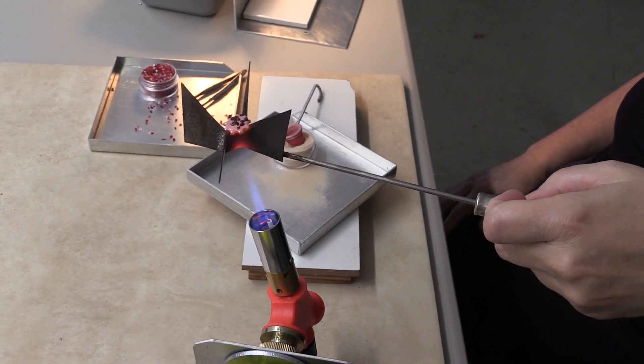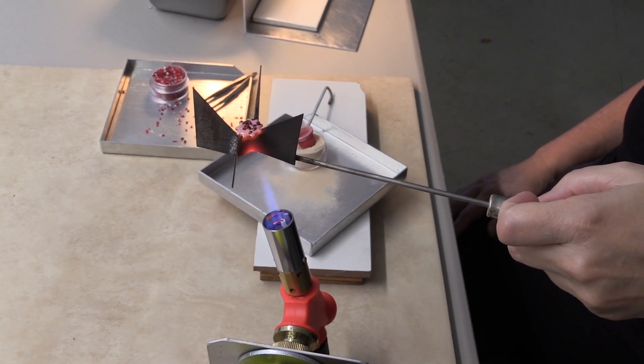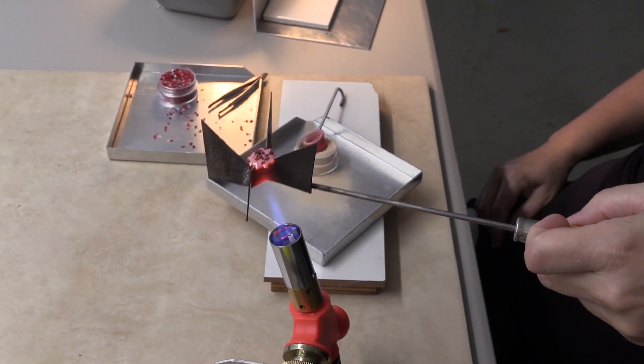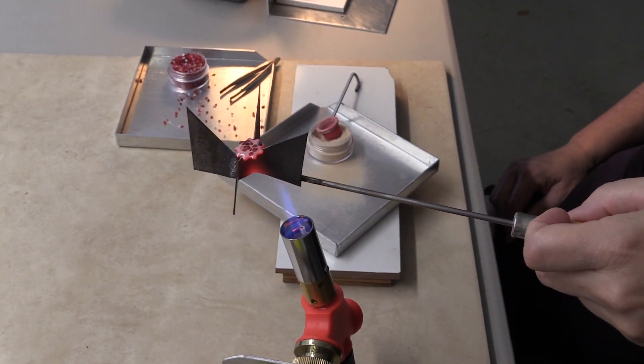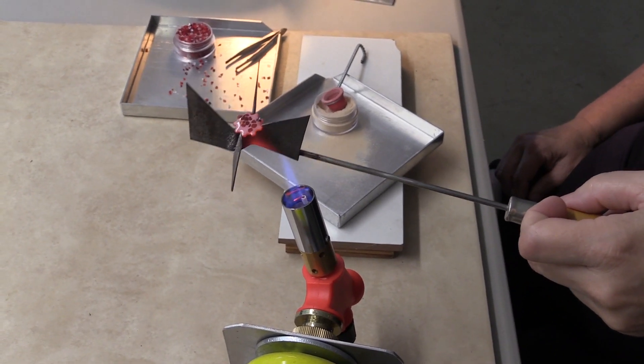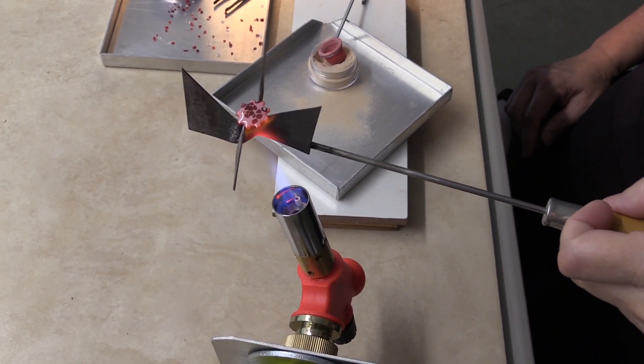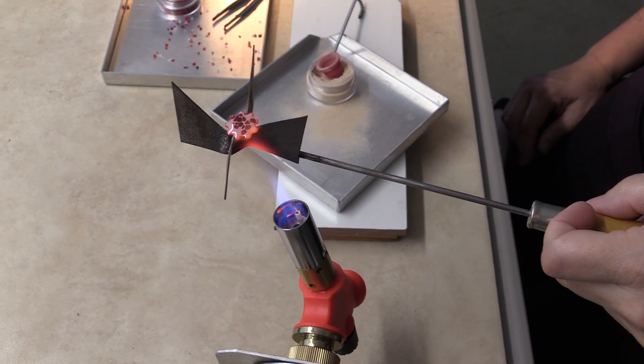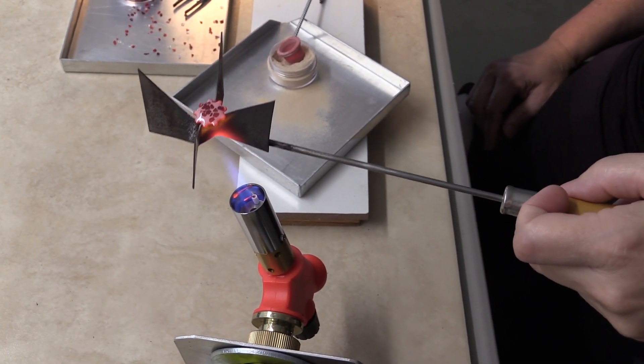Be sure to keep rotating. If you hold it one place too long, it could make your enamel pool up into one area instead of evenly distributing across the copper piece. I don't know if you can see that, but it's pretty even. And again, remember a little frit goes a long way. Don't feel like you have to take all your frit and dump it on top and fill it from corner to corner because it does spread out.